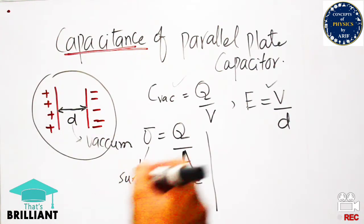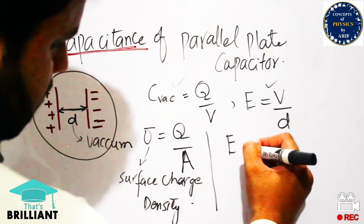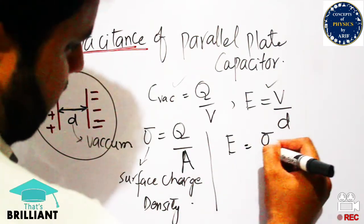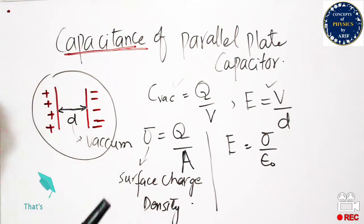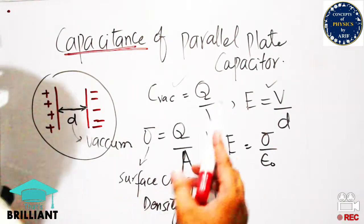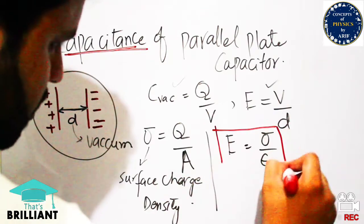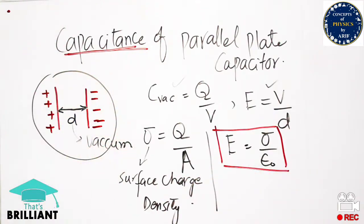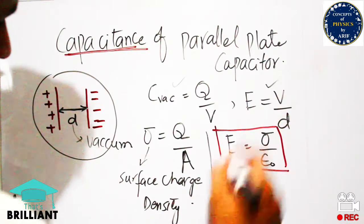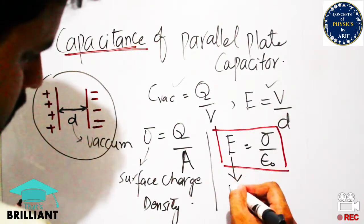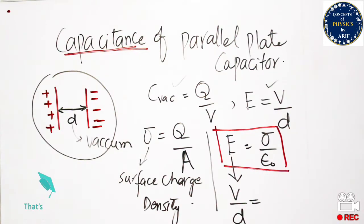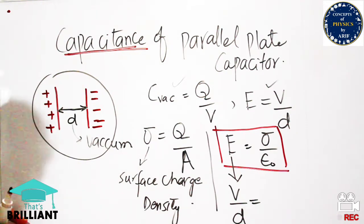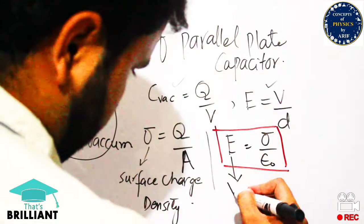In a previous topic, we discussed the electric field intensity of two parallel plate capacitors with infinitely large plates. The electric field intensity was found to be σ/ε₀, from Gauss's law. Since electric field intensity also equals V/d, we can substitute to relate these expressions.